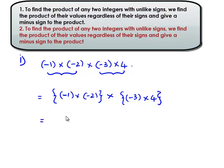To find the product of negative 1 and negative 2, first we multiply their values regardless of their signs. That gives 1 into 2 is equal to 2. When we multiply two similar signs, we always get a positive sign — that is plus 2.